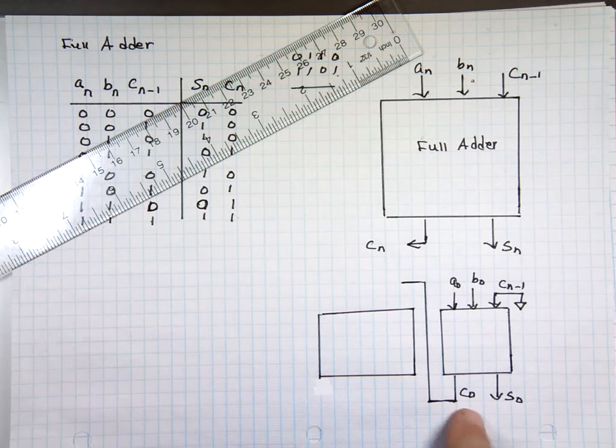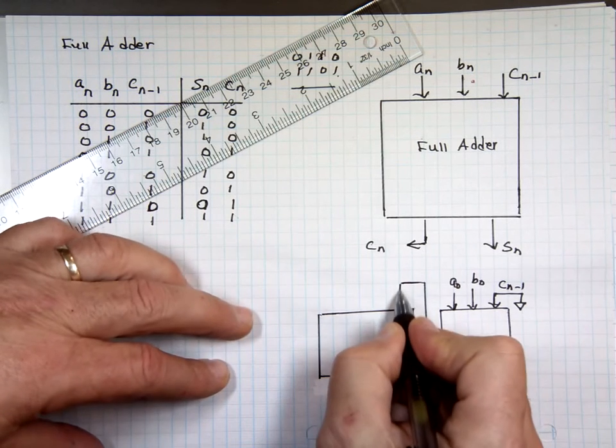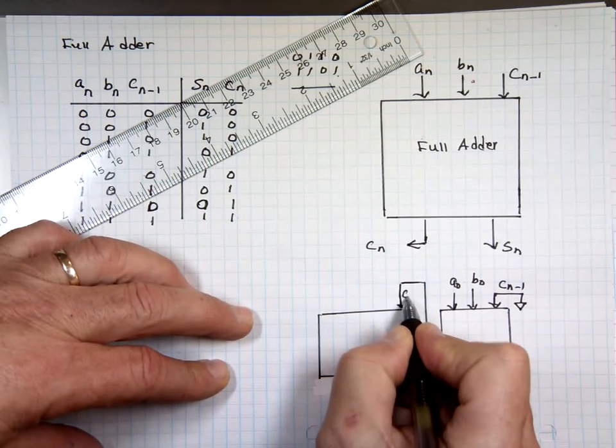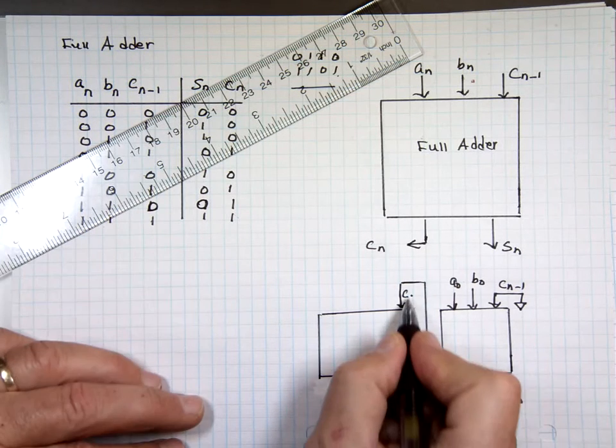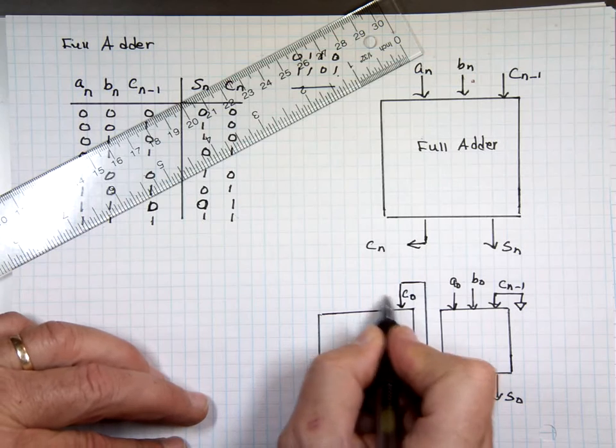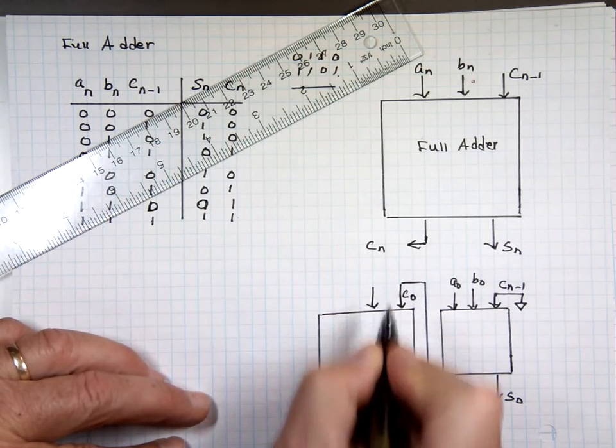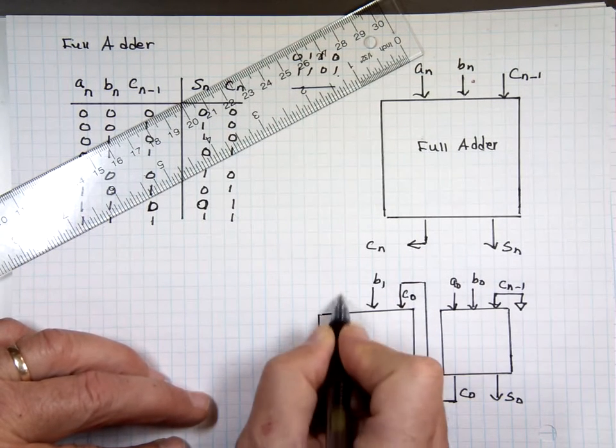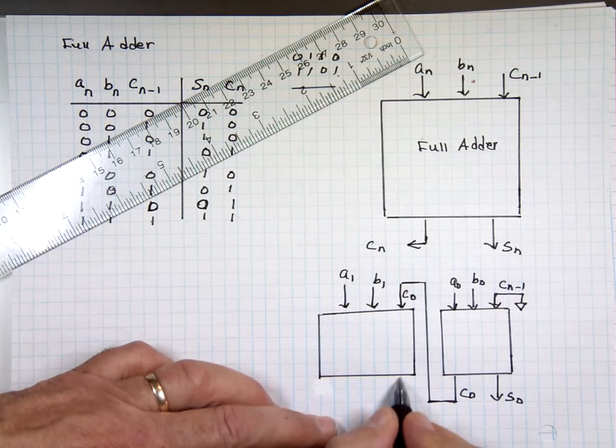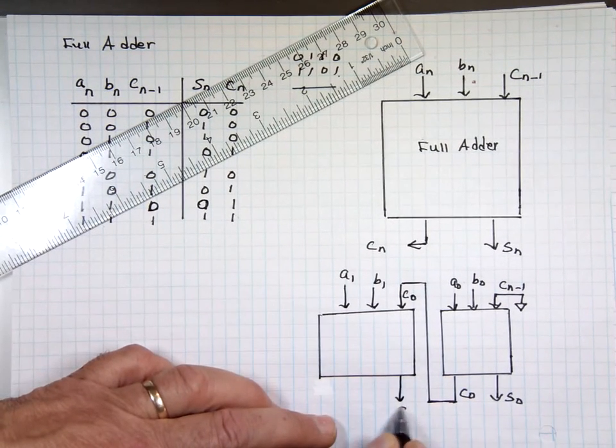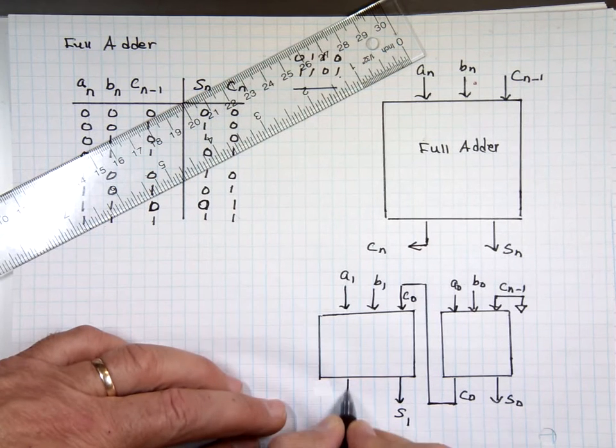And the carry from this stage now becomes the input here. That's C1, or C0 actually coming in. And this will be what? B1 and A1. And that will give me a sum of S1 and a carry of C1.